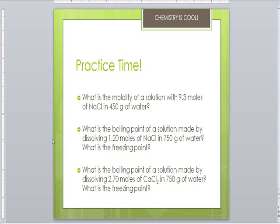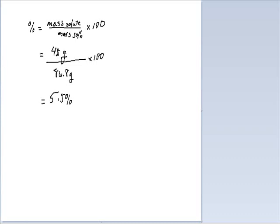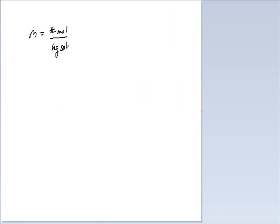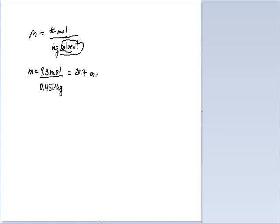The first question: what's the molality of a solution with 9.3 moles of sodium chloride and 450 grams of water? Molality is number of moles per kilogram of solvent — make sure it's solvent, not solution. We have 9.3 moles and 450 grams of water, which is 0.450 kilograms. Our molality is 20.7 moles per kilogram.